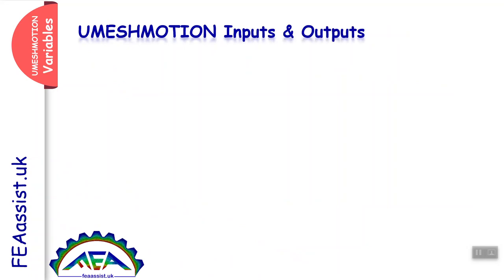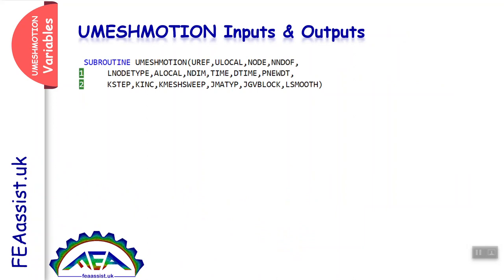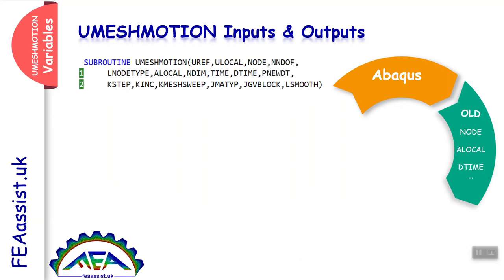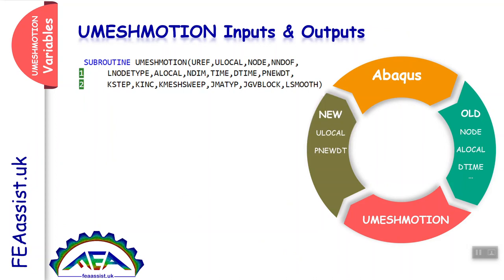UMESHMOTION has some variables — some of them are inputs. We need to get those inputs, process them, and export the processed results as output into Abaqus. In other words, Abaqus computes node positions and time variables. We need to get these variables, process them in UMESHMOTION, and compute the displacement or velocity of the nodes in the X, Y, and Z directions, then return these variables to Abaqus.